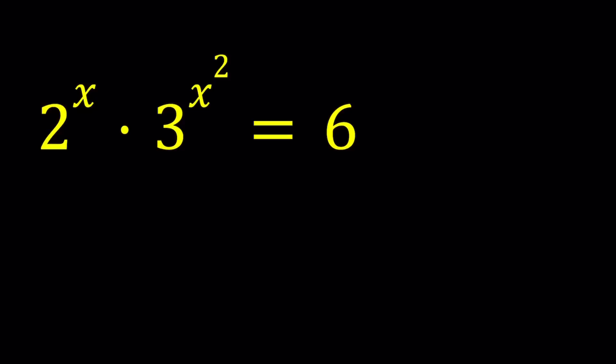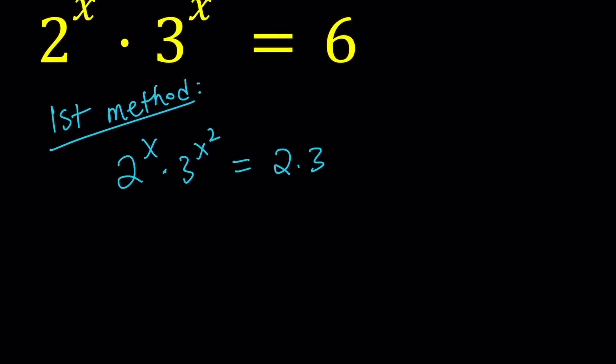Let's start with the first method. I'm going to split the 6 into 2 times 3, and then put the 2's together and the 3's together. This gives a really nice equation, but I have a 2 in one base and 3 in the other base, so we have two different bases.